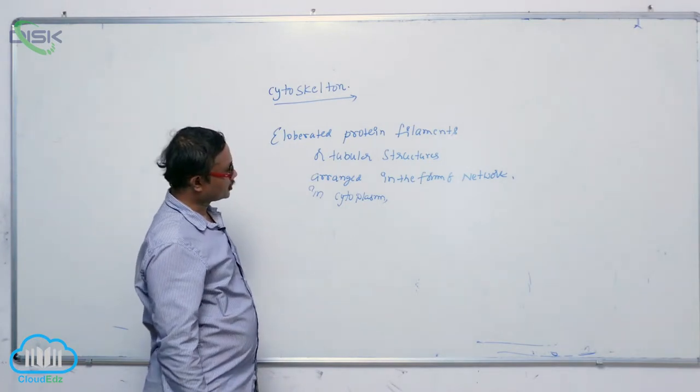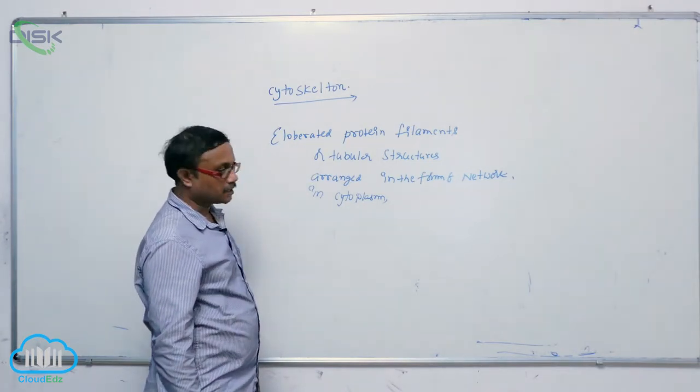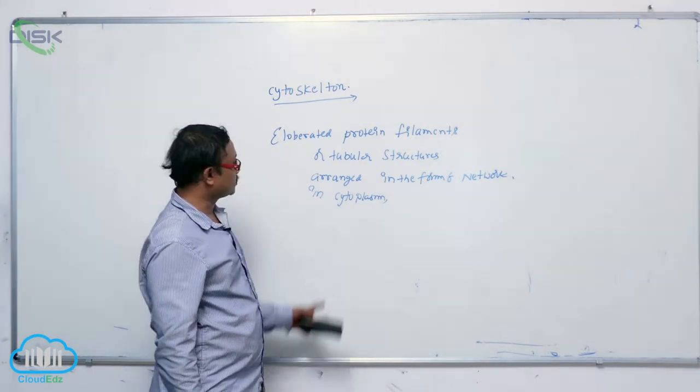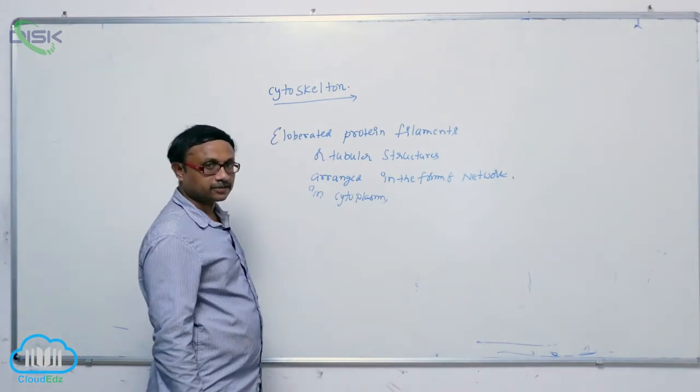Elaborate protein filaments are tubular structures arranged in the form of a network in cytoplasm. So that is known as the cytoskeleton.